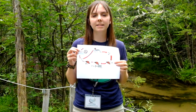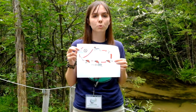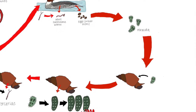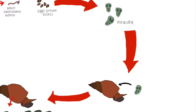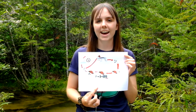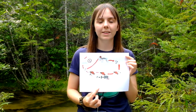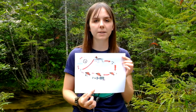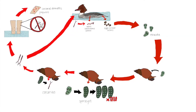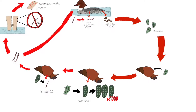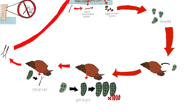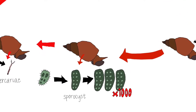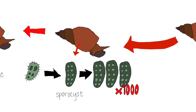Once the miracidia find the appropriate intermediate host — which is always a snail — they enter into its body and move into the next stage of the life cycle. Once inside the snail, the miracidia elongate and become a reproductive sac known as a sporocyst, and the sporocysts begin to multiply through asexual reproduction, creating a huge population of thousands of sporocysts within the snail's body.